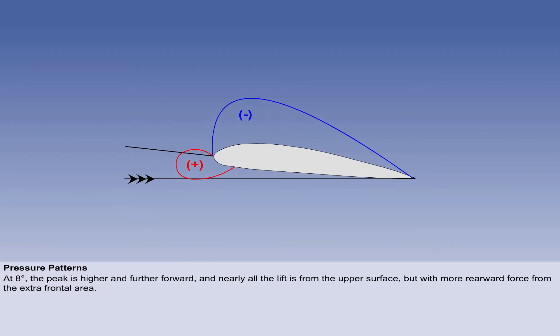At 8 degrees, the peak is higher and further forward, and nearly all the lift is from the upper surface. But the increased frontal area means that stagnation pressure is adding to the rearward force.